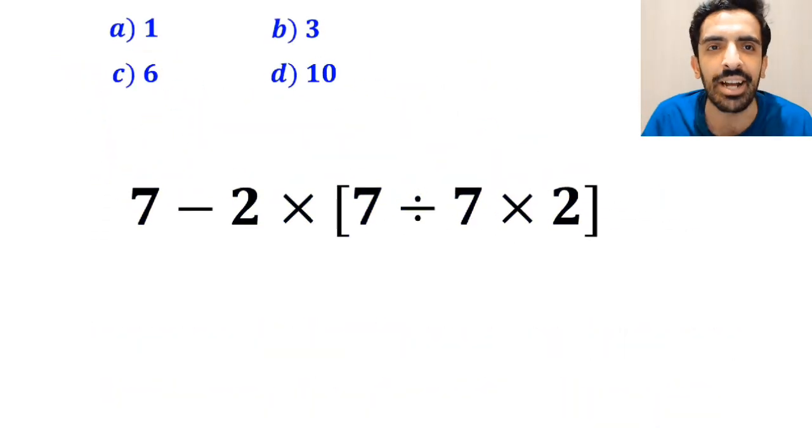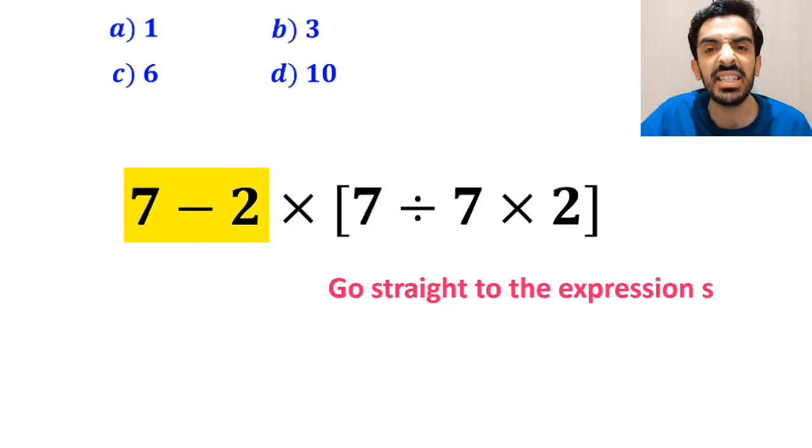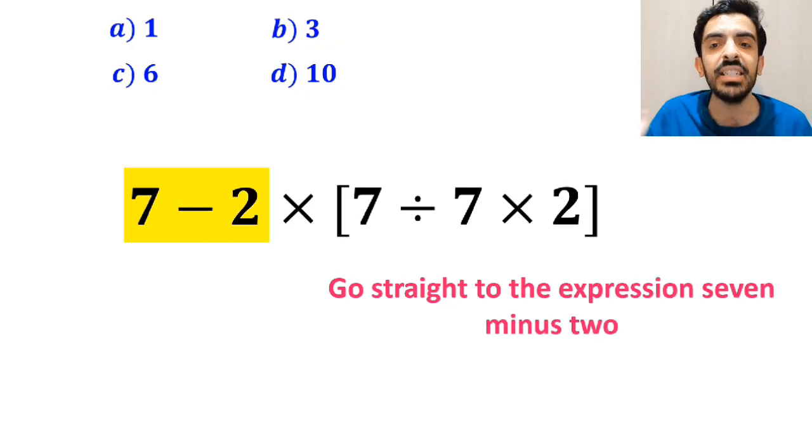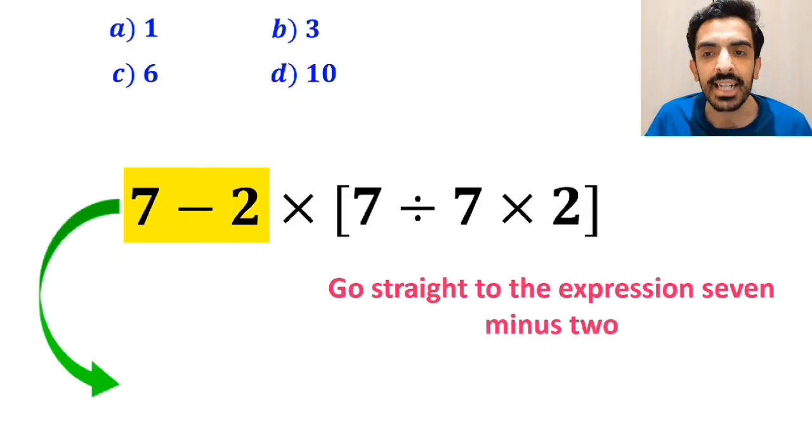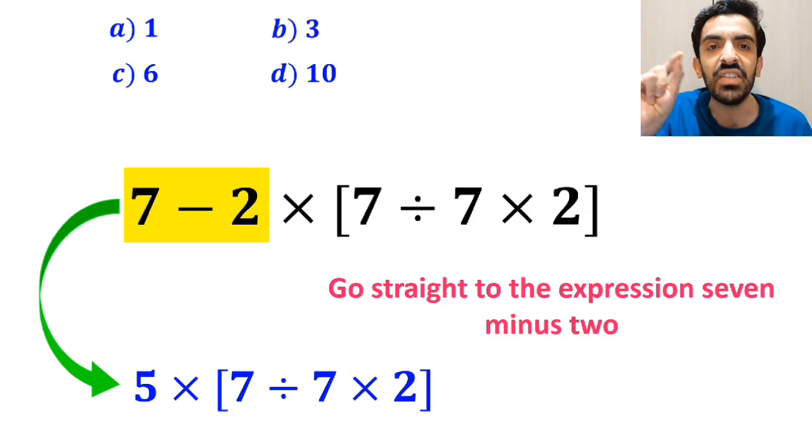Let's break it down and solve it together. Many people at first go straight to the expression 7 minus 2, which I have highlighted in yellow. And instead of this expression, they write 5 multiplied by 7 divided by 7 times 2 inside the brackets.